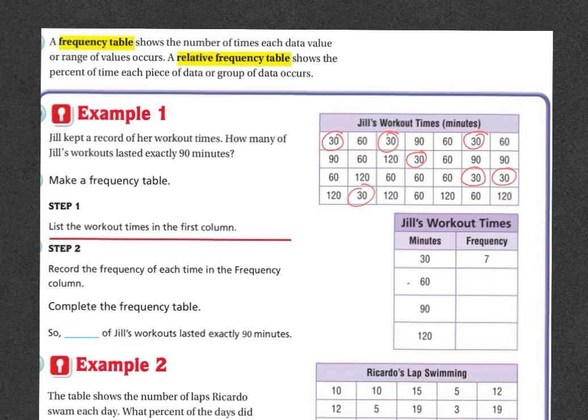Now we're going to do the 60 minutes. I'm going to change my color. So 1, 2, 3, 4, 5, 6, 7, 8, 9, 10, 11. So it looks like 11 times she worked out for 60 minutes. And then let's do 90 minutes. 1, 2, 3, 4.